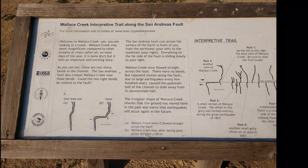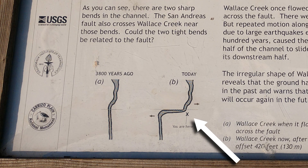What I should have said is many earthquakes over thousands of years. This sign along the trail explains what happened: one major earthquake in 1857, known as the Fort Tejon earthquake, caused this part of the San Andreas Fault to shift 30 feet.